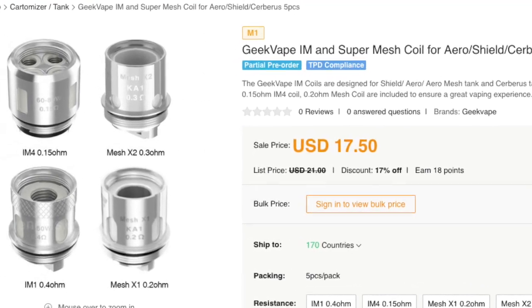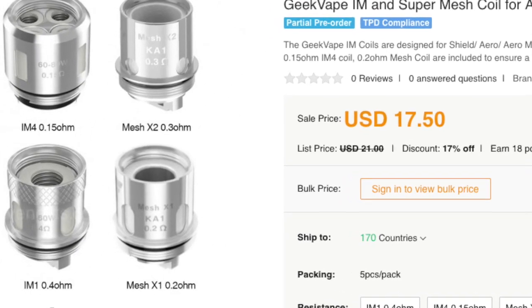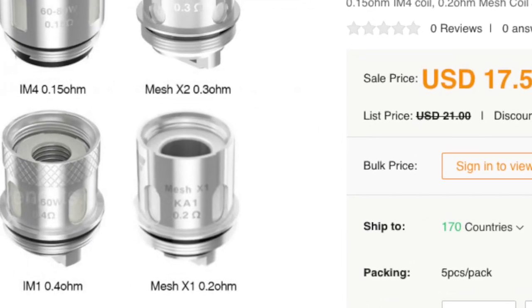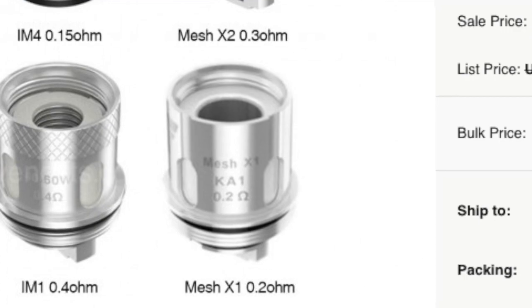The coil that GeekVape designed this tank for is called the Super Mesh X1 Coil, which is a 0.2 ohm coil rated to work best between 60 to 80 watts, but it can go up to 90 watts. And I've been using it at 90 watts just fine.